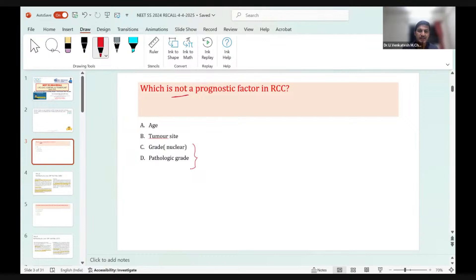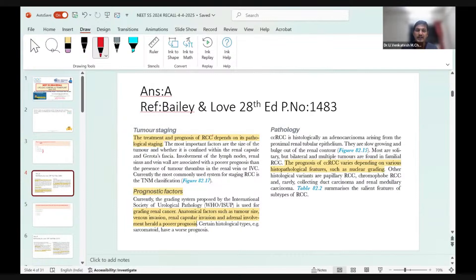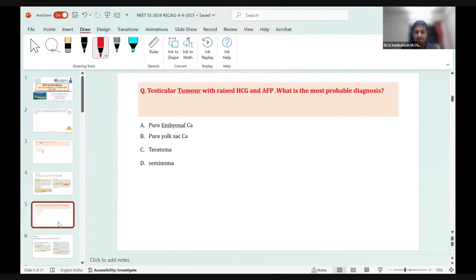The options are age, tumor size, grade, and pathological grade. Pathological grade has a direct relationship with prognostication, as well as tumor size. In TNM staging for RCC, the tumor is T1, T2, T3, and T4 based on size: less than 7, more than 7, extending beyond Gerota's, and advanced. Tumor size matters, whereas age is not a direct prognostic factor for RCC. The prognosis varies based on histopathological features, nuclear grading, tumor size, venous invasion, and site.